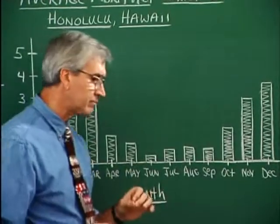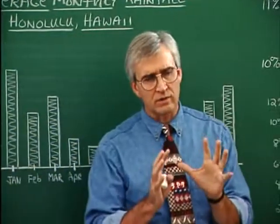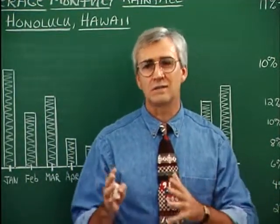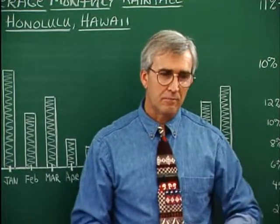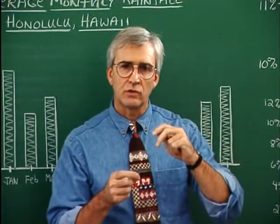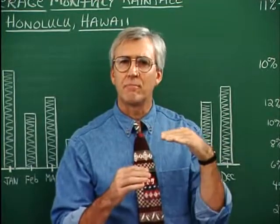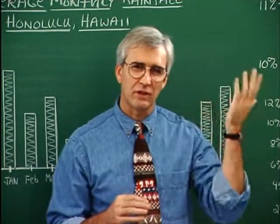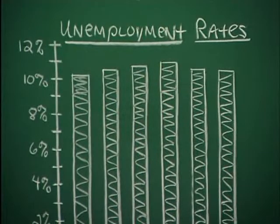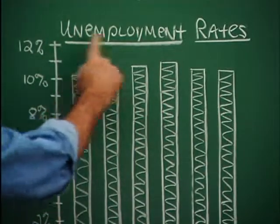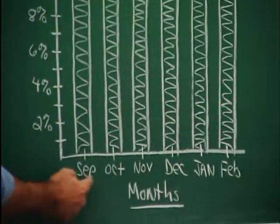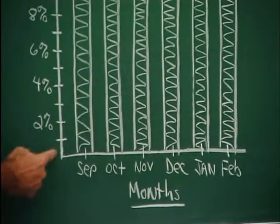There is a way for bar graphs to be misleading — either deliberately or not deliberately. A way of causing a bar graph to be misleading is to lop off part of the graph and forget that it's there. Here's a graph of unemployment rates in the United States over several months. Down at the bottom are the various months — September through February — and on the left axis is the percent associated with unemployment.